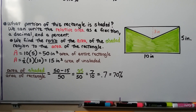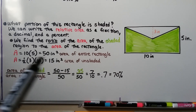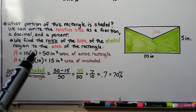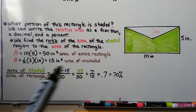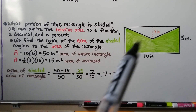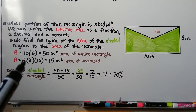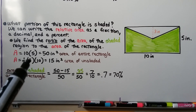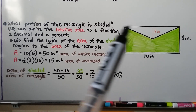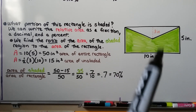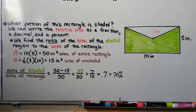We find the ratio of the area of the shaded region to the area of the rectangle. For the entire rectangle, we do length times width: 10 times 5, which is 50 inches squared. For the unshaded triangle, we do half base times height: one-half times 3 times 10 — because we have 3 inches and 10 inches — giving us 15 inches squared for the area of the unshaded region.